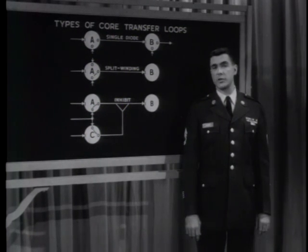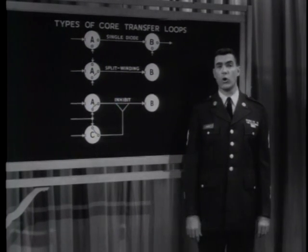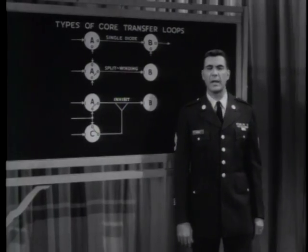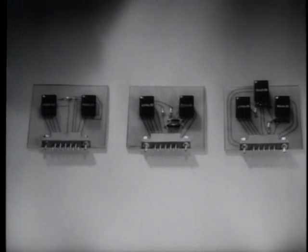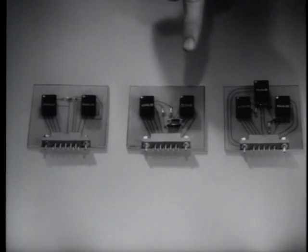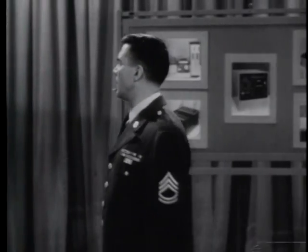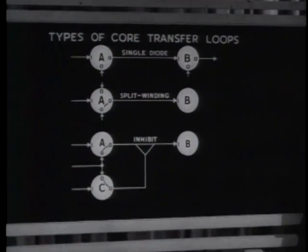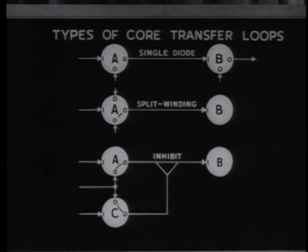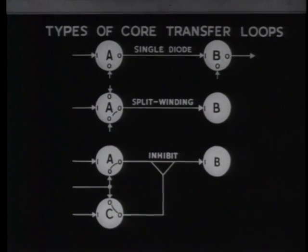Registers that work in parallel are put together by combining split winding loops with single diode loops. In fact, almost all the functions of control, logic, and arithmetic are achieved by using these three loops — singly or in combination. They have many advantages: they are small and lightweight, so that a lot of them can be put onto a circuit panel, and they are rugged. The single diode, split winding, and inhibit transfer loops are, in a very real sense, the building blocks of an automatic data processing system.